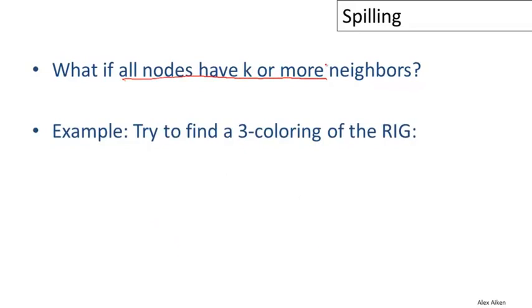Let's take a look at our favorite register interference graph, the one we've been using in our examples. Now let's say that the machine we want to use only has three registers. So instead of finding a 4-coloring of this graph, we need to find a 3-coloring.